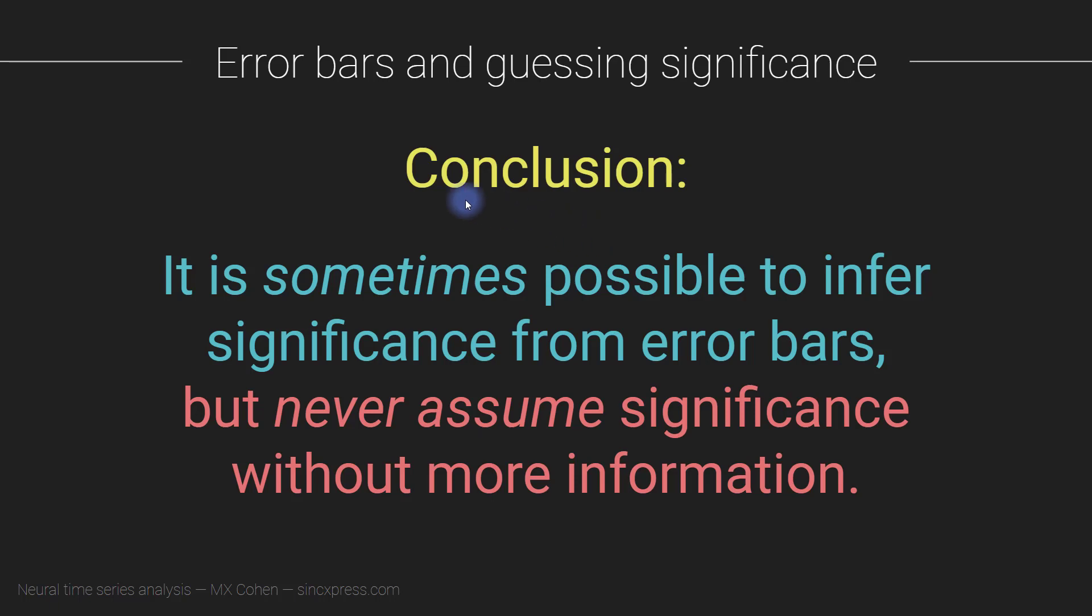Now the thing is, it is sometimes possible to infer significance from error bars, but only in some situations. It depends on what's being shown in the plot and what the error bars reflect. So it is sometimes possible to infer significance, but not always. There are many situations where error bars do not tell you anything about significance - all they tell you is about variance.